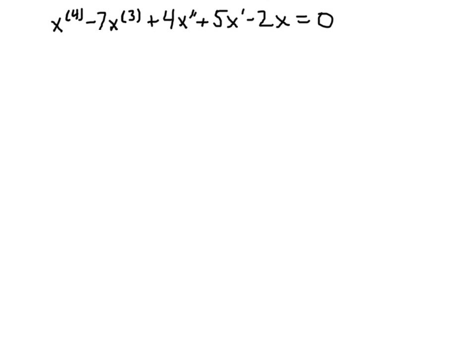The first step is to take the equation and solve for the highest order derivative, getting the fourth derivative alone on one side. When we move all the others to the other side, we go from the lowest derivative — the zeroth derivative in the case of the x term — up to the highest, the third derivative. So we'll have 2x, minus 5x prime, minus 4x double prime, plus 7 times the third derivative. That's our first step, shown in blue.